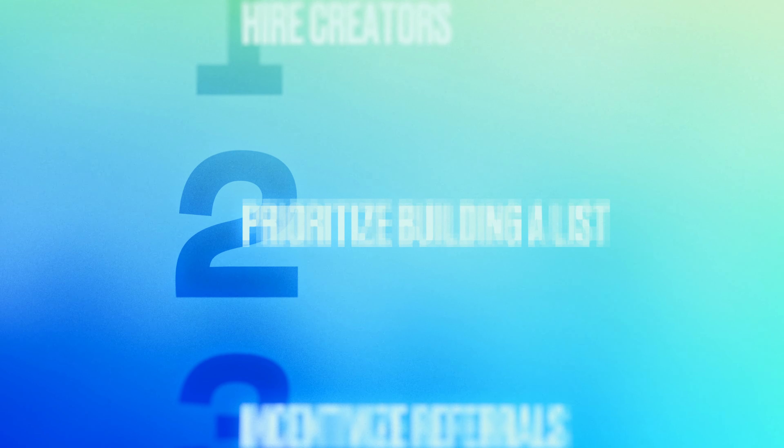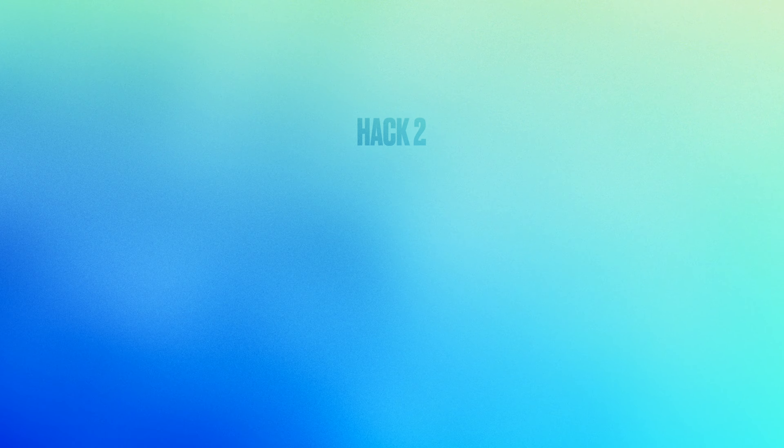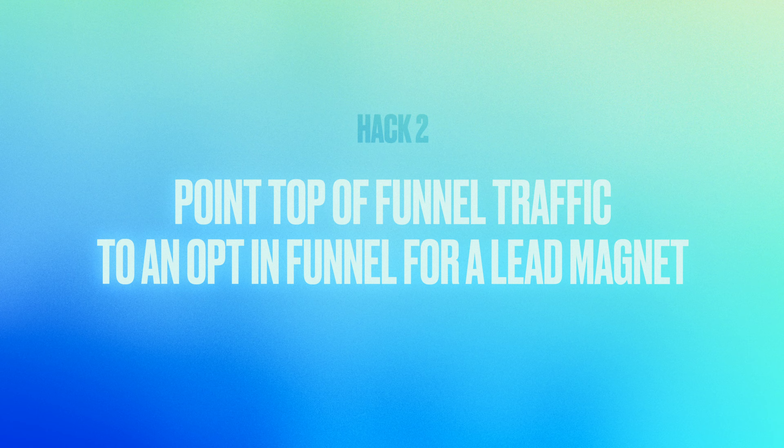Now that we've solved for top-of-funnel traffic, let's talk about the actual funnel to convert this traffic into paying users. A big mistake people make is sending traffic directly to the signup URL — you're wasting so much traffic and missing out on extra revenue. It becomes incredibly important at scale to maximize how many dollars you earn per lead on average. So point your top-of-funnel traffic to an opt-in funnel for a lead magnet — it could be a guide, a free course — and require name, email, and phone number.